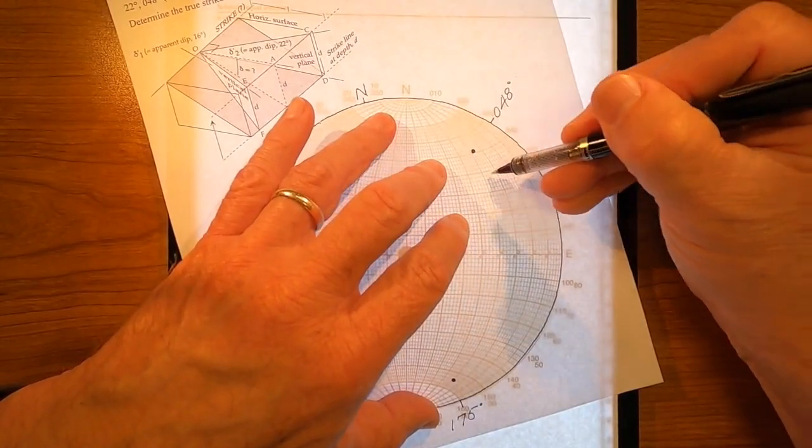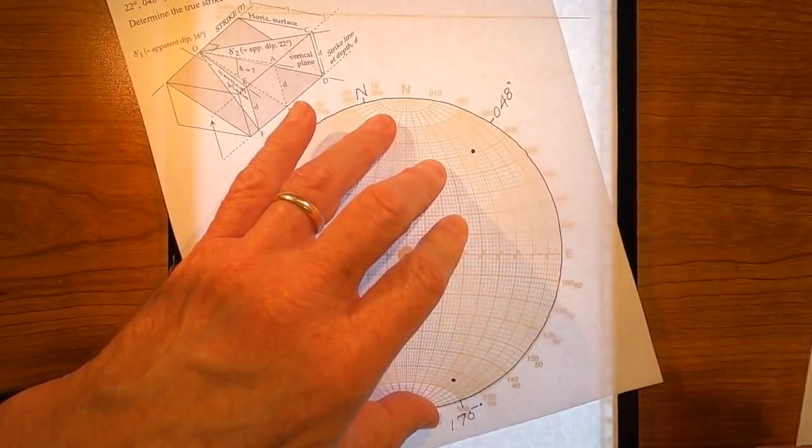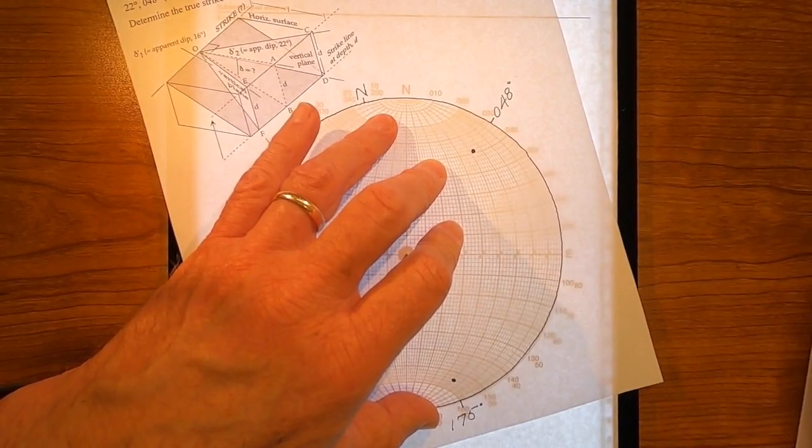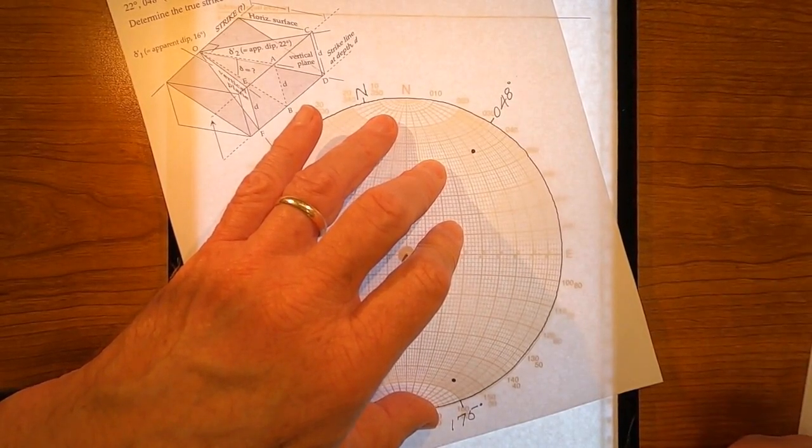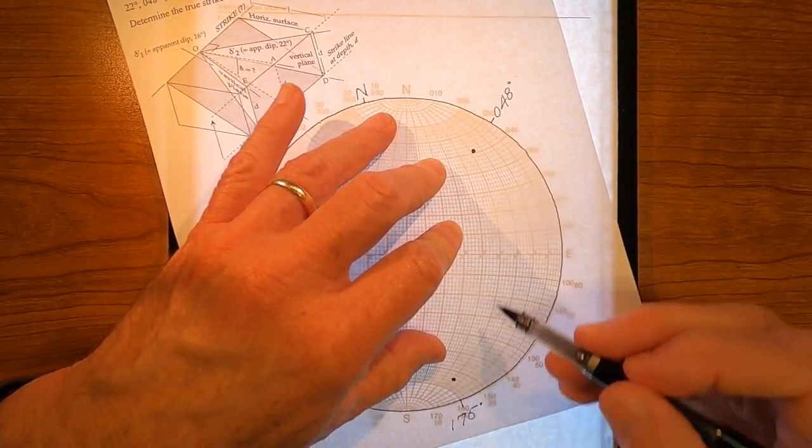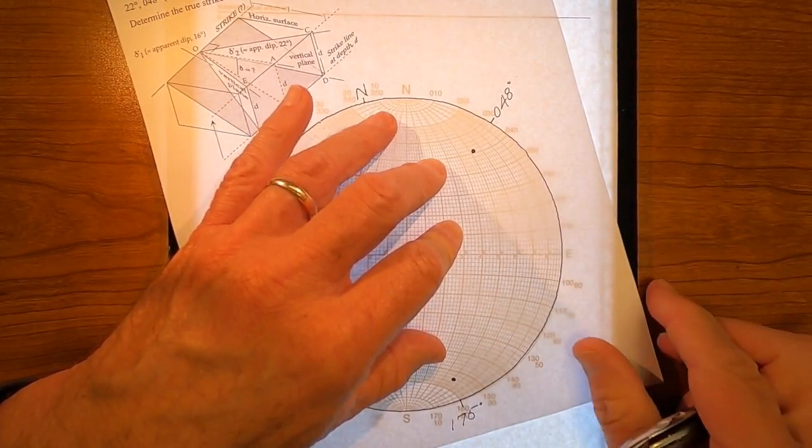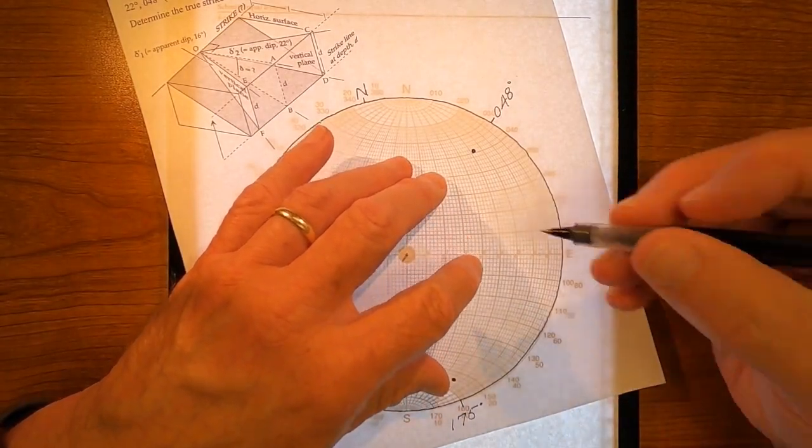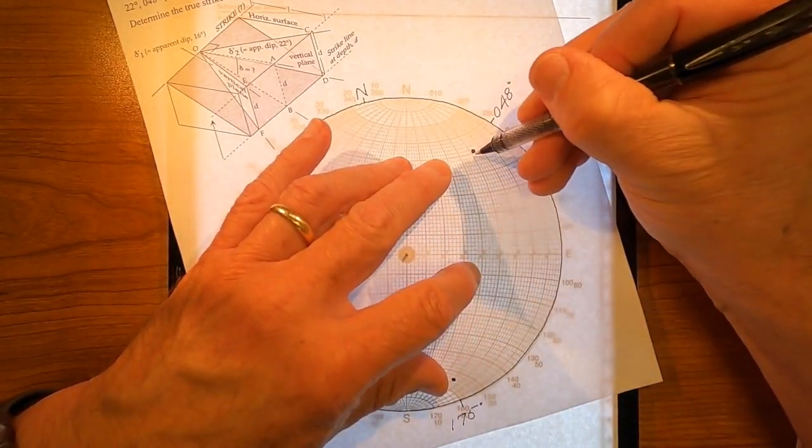So, that is the great circle that fits these two dots. That fits these two, these are really lines in space, representing those two apparent dips. And I just established what plane fits those two dots. All right? And that's going to be this plane right here.